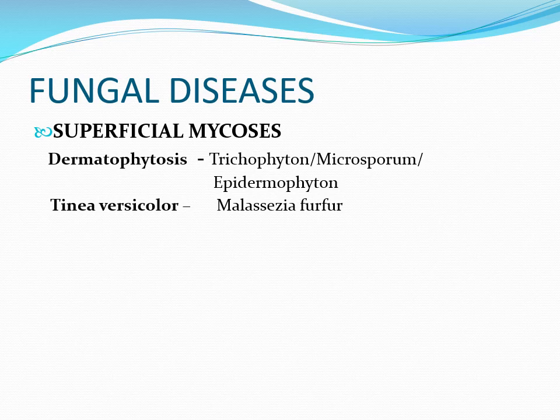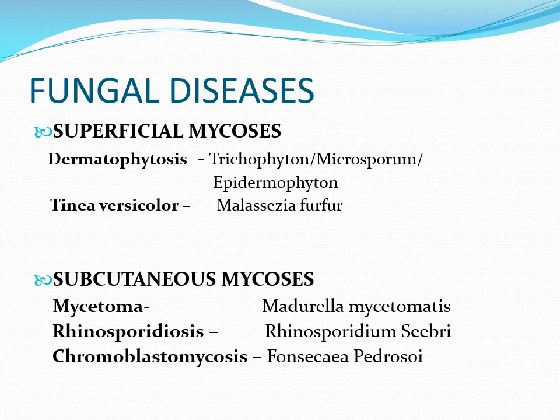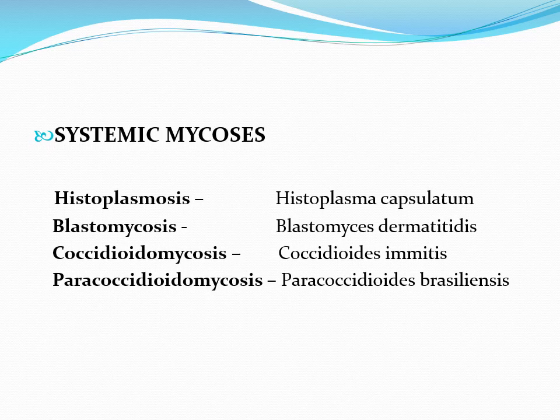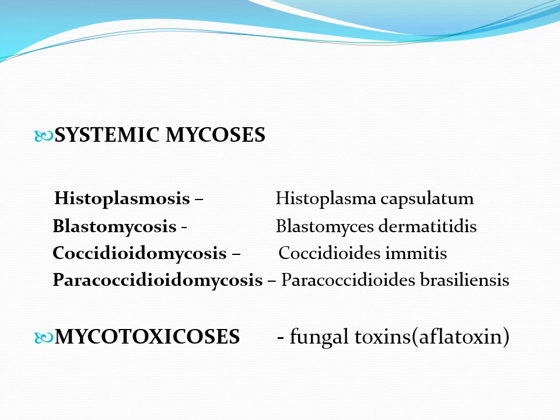Superficial mycosis involves the superficial structures — skin, hair, and nails. Dermatophytosis caused by dermatophytes and tinea versicolor are examples of superficial mycosis. Subcutaneous mycosis involves subcutaneous tissue; examples include mycetoma and rhinosporidiosis. Systemic mycosis involves organs and different body systems and is mainly caused by dimorphic fungi — examples include histoplasmosis and blastomycosis.